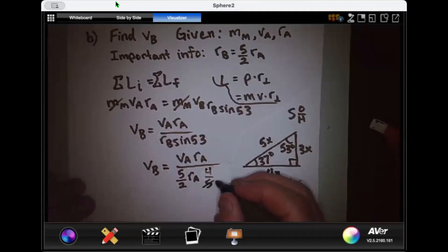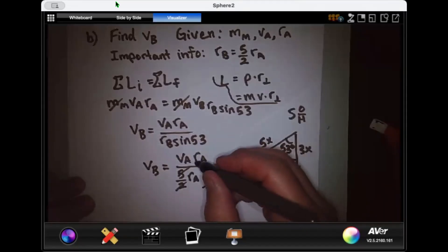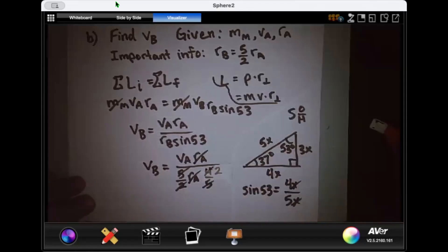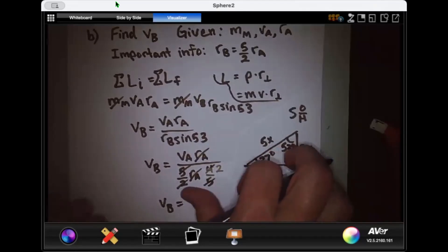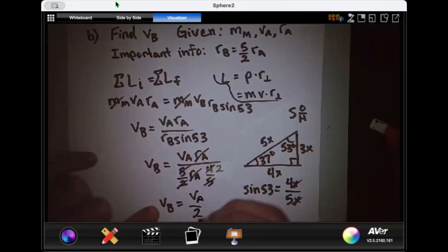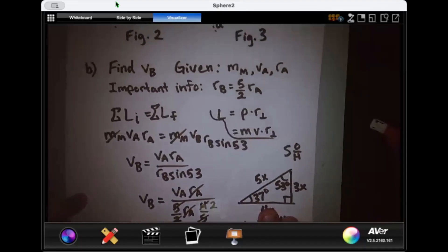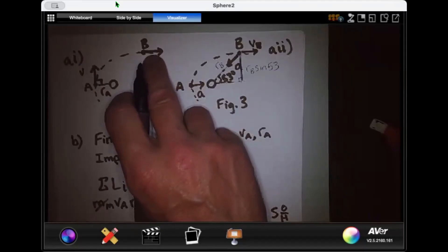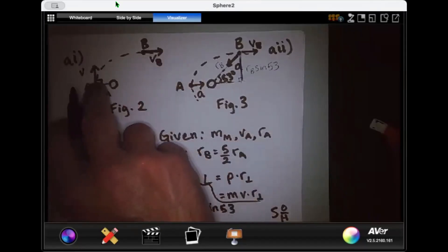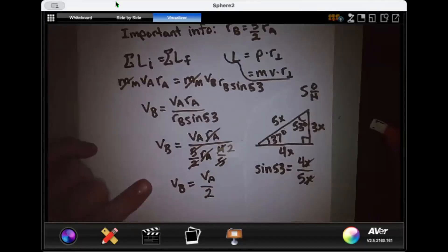Awesome. What happens to the fives? Oh my goodness, they cross out. And check it out. This 2 crosses out, leaving this 4 as a 2. 4 divided by 2 is 2. And what else crosses out? The RAs cancel out. So everything's dropping, and we get this simplistic expression. VB equals VA over 2. That is to say that when the moon is right here, it's traveling half as fast as when it was right here at point A. Let's box this answer, and let's move on to part C.